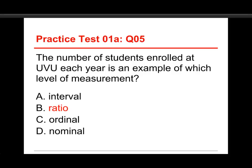Nominal just places people into categories — for instance, what college were you enrolled in? Ordinal would rank colleges, such as biggest to smallest. Interval would specify how far apart the schools are from each other. But ratio adds the true zero, which is characteristic of something you're counting, starting at zero and going up. That's the answers to the first of three practice tests for chapter one. See you at Practice Test 01B.